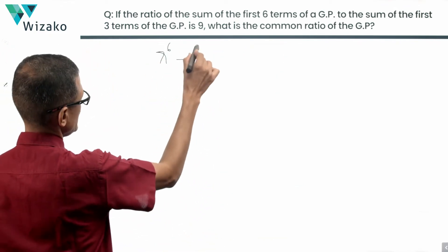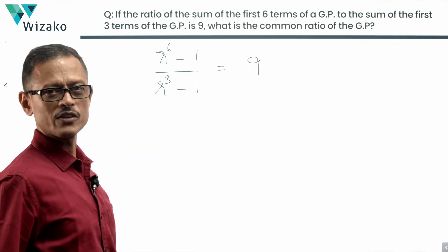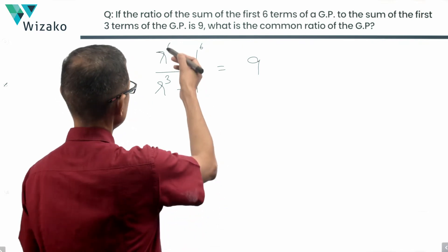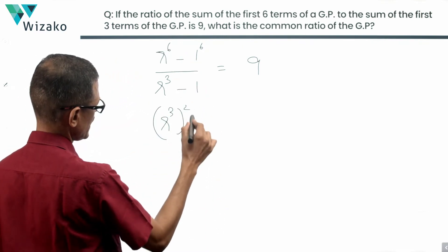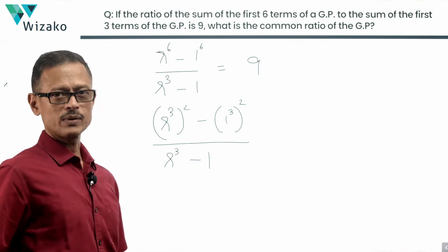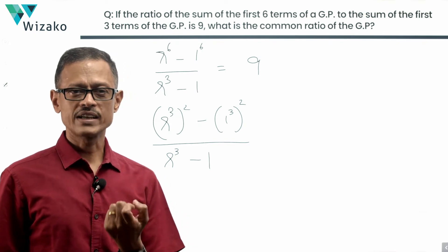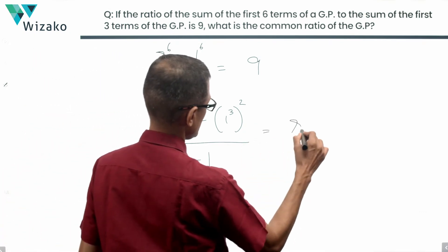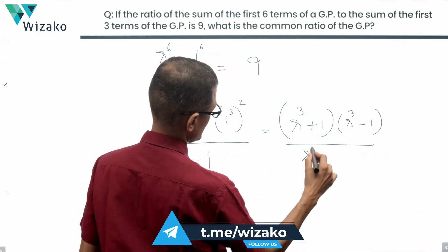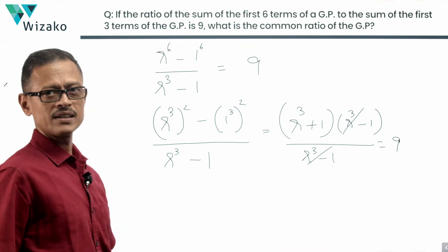Now, r to the power of 6 minus 1 can be written as (r cubed) squared minus (1) squared, so this becomes (r cubed)² minus 1² divided by (r cubed minus 1). This is of the form (x squared minus y squared) divided by (x minus y), which factors as (x plus y)(x minus y) divided by (x minus y), giving us (r cubed plus 1) times (r cubed minus 1) divided by (r cubed minus 1), equals 9.